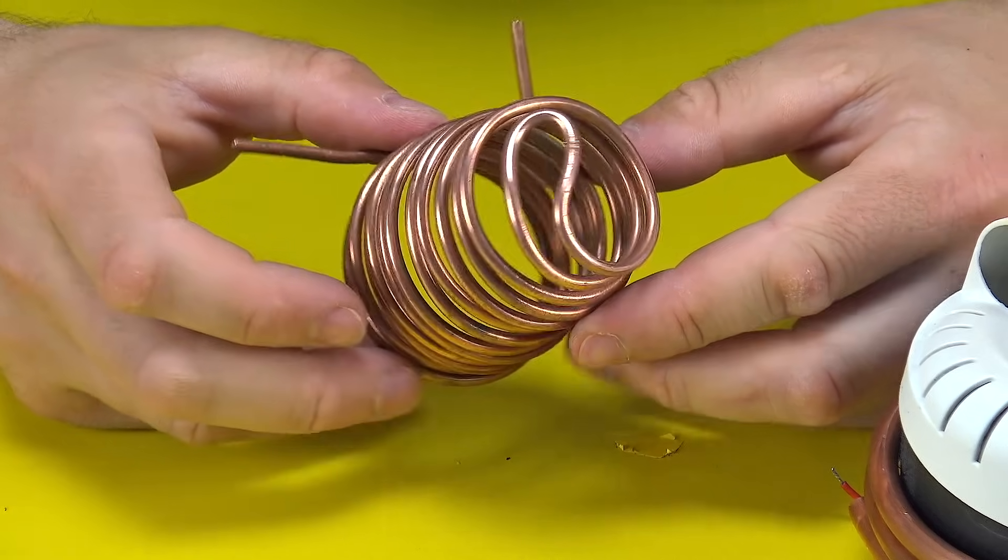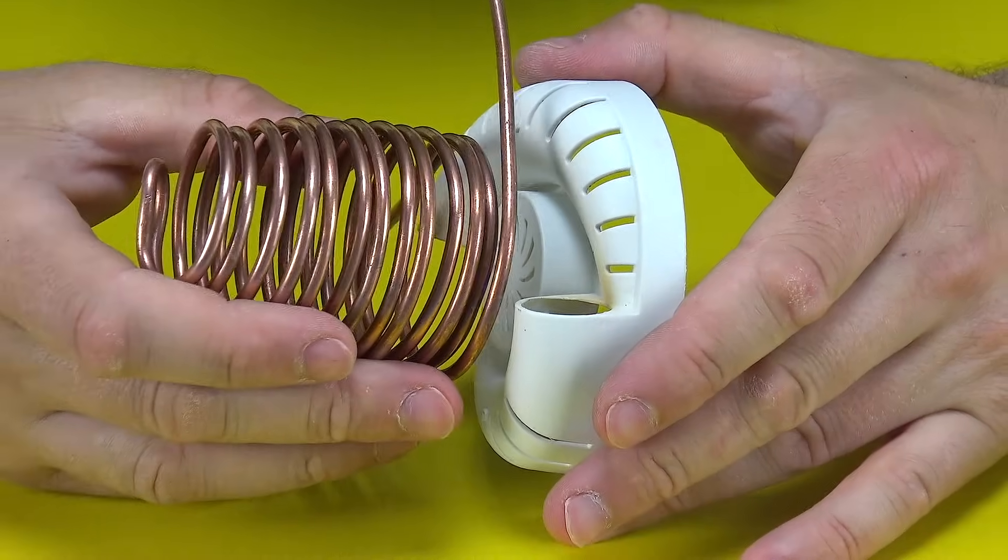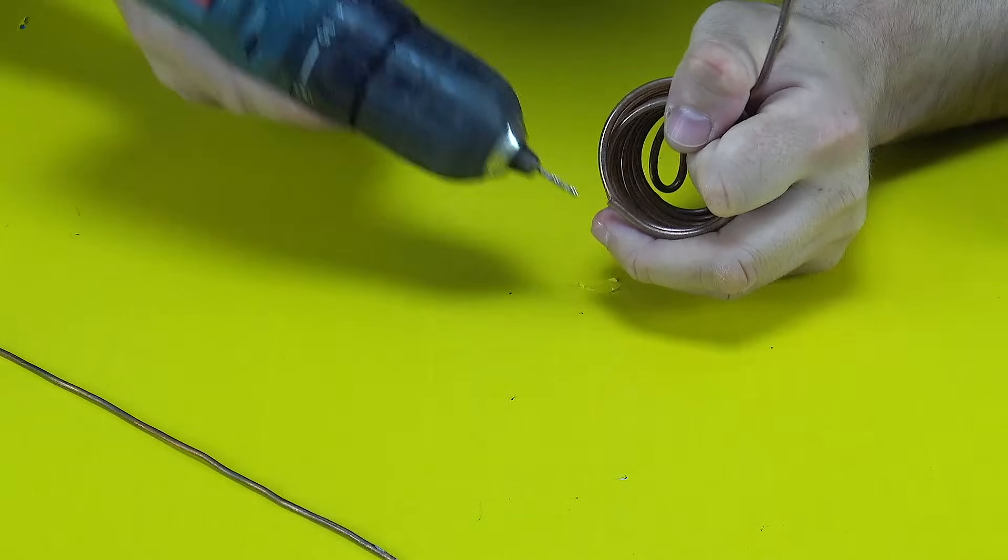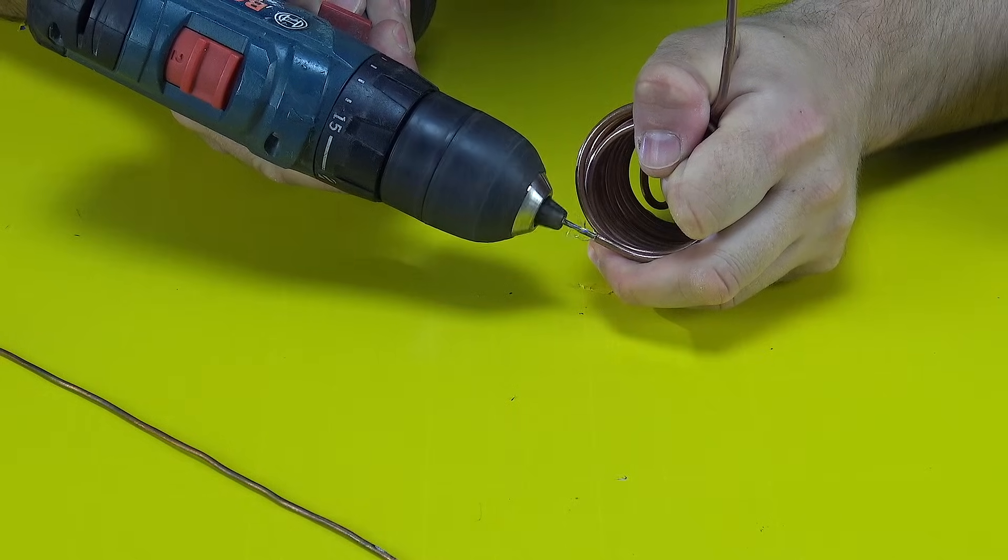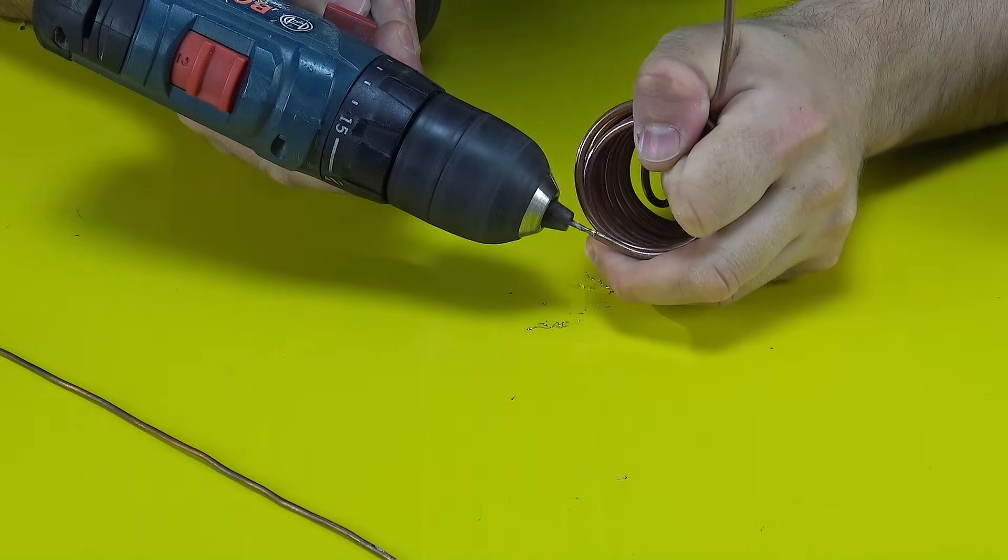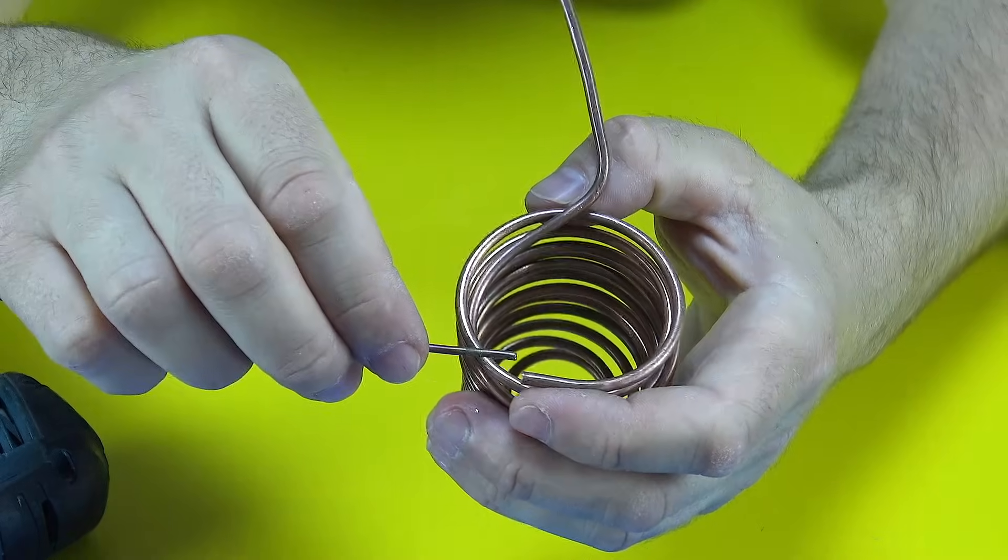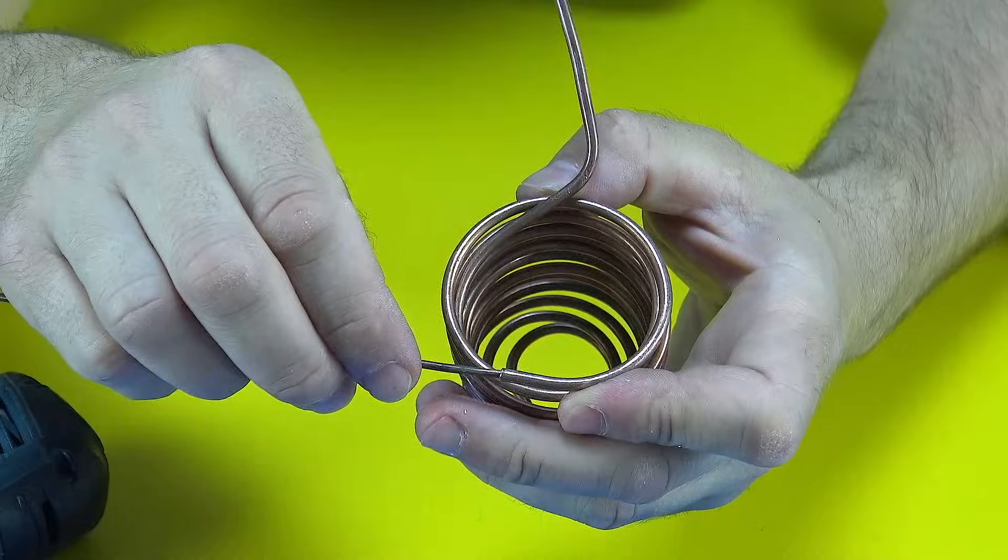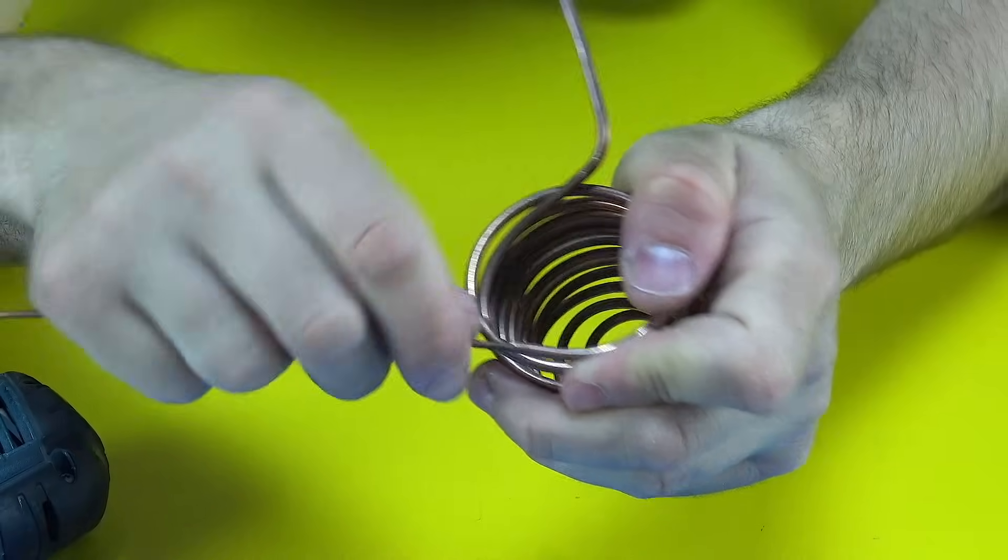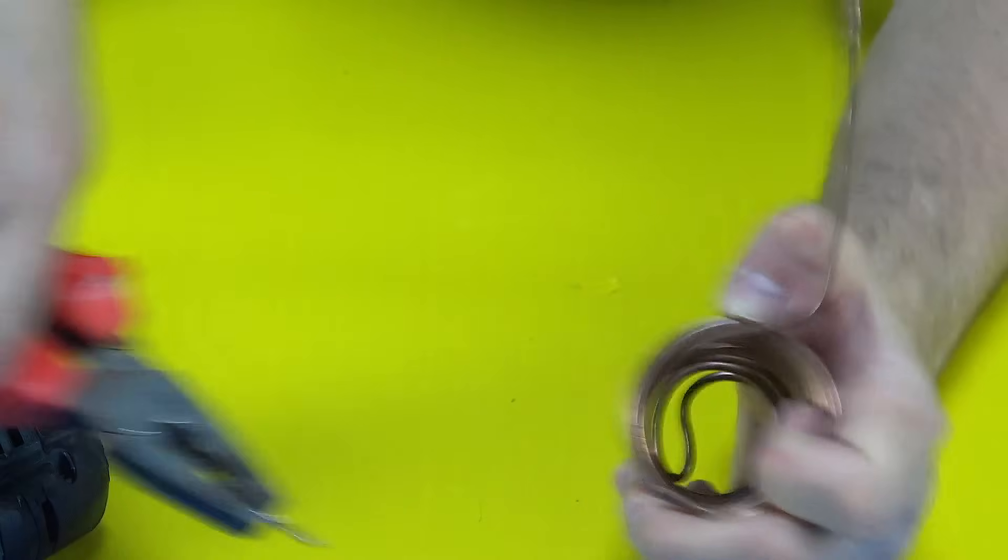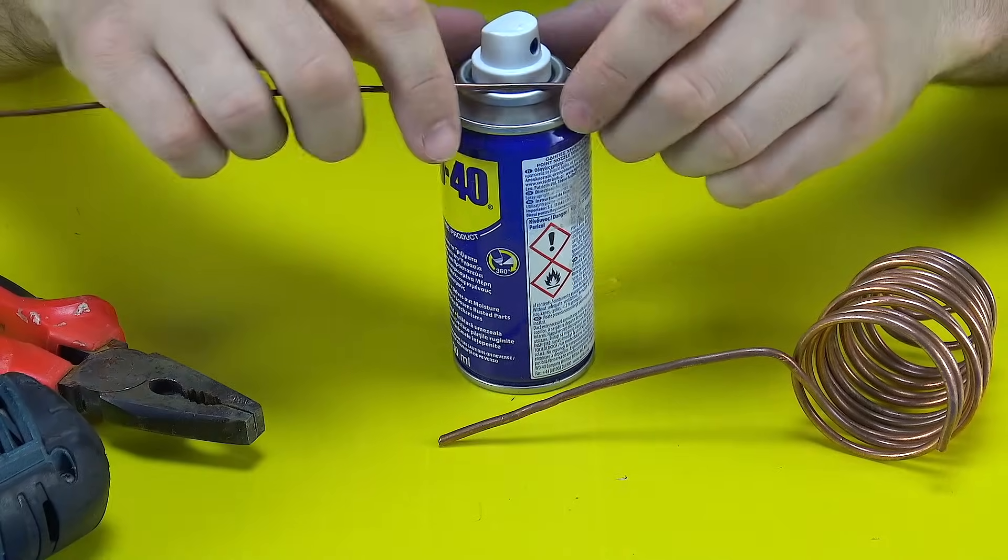To make the whole system work together, the condenser and the evaporator need to be connected. And that's where the capillary tube comes in. This tiny but mighty tube plays a crucial role. It regulates the pressure of the refrigerant, turning the liquid coming from the condenser into a cold mist, ready to evaporate. Think of it like a little gateway, letting the refrigerant sneak from high pressure to low pressure so the next cooling cycle can begin. Clever, right?